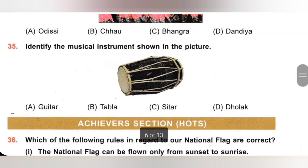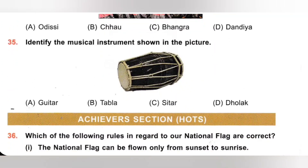35th. Identify the musical instrument shown in the picture. A. Guitar, B. Tabla, C. Sitar, D. Dholak. The musical instrument shown in the picture is Dholak. Option D is the correct answer.